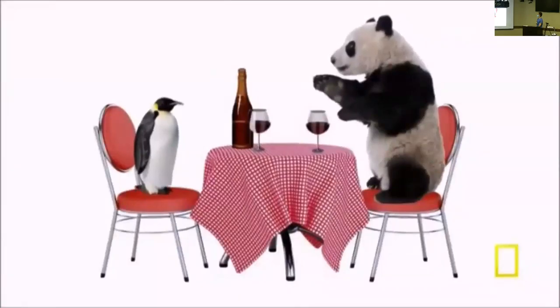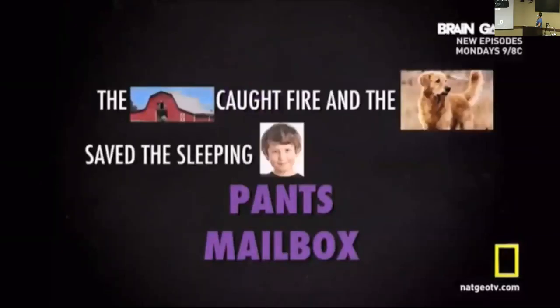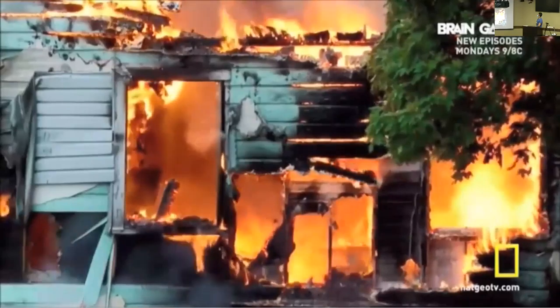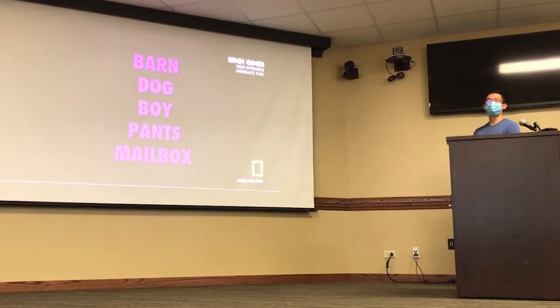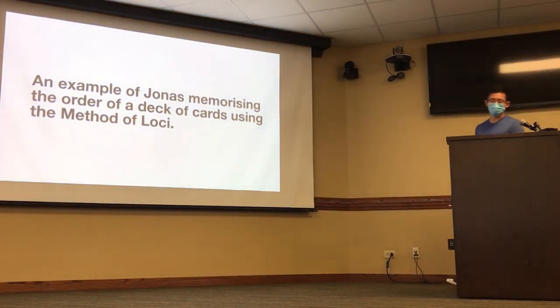What's his secret? Each time you said two animals, he turned them into a vivid picture. When you said penguin — black and white — and panda — also black and white — he imagined them having a proper dinner together. By using vivid imagery, Nelson was able to boost his memory. You could try to memorize a random list of objects by reading it over and over, or try imagining a story: 'The barn caught fire, and the dog saved the sleeping boy by dragging him by his pants to the mailbox.' That's visual imagery encoding — and you can use it for learning as well.